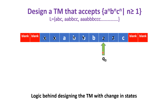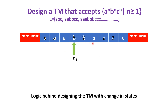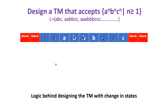Again, move back in the same state Q3 until we get the first X, keeping all the input symbols as they are in the tape. Once we get the first X, change the state from Q3 back to Q0 and move towards the right. This completes the second cycle. Again, if Q0 is pointing to A, then repeat the cycle.